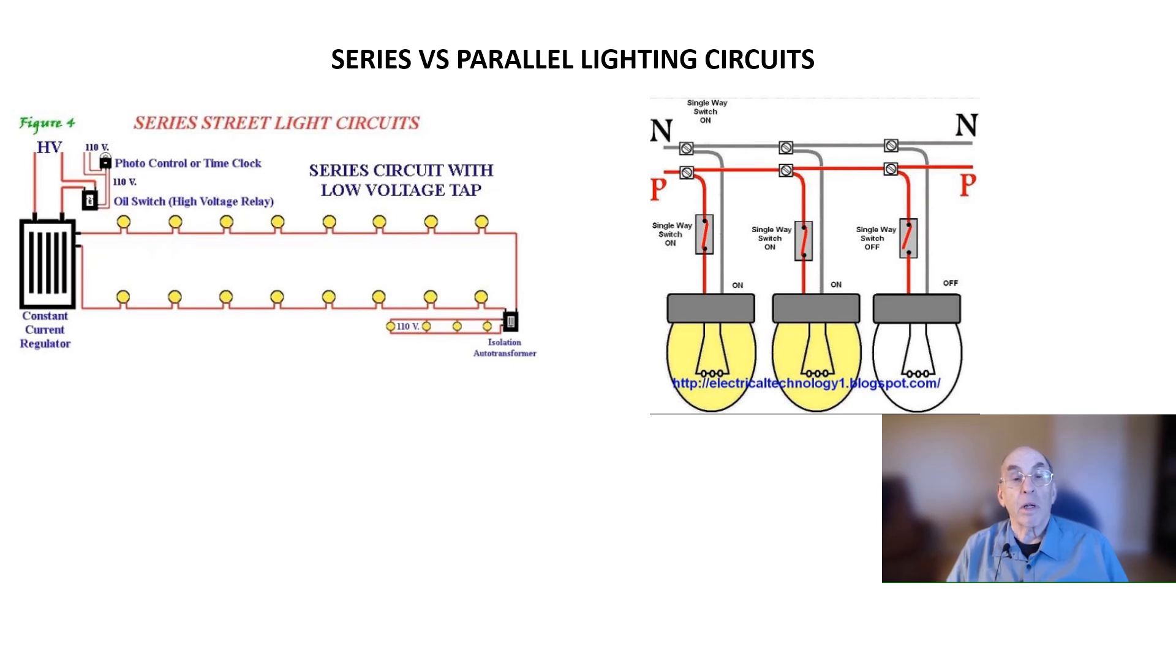The series circuit on the left has the advantage that it's more efficient. It actually requires less power to produce a given amount of light from each lamp compared to the parallel circuit on the right.